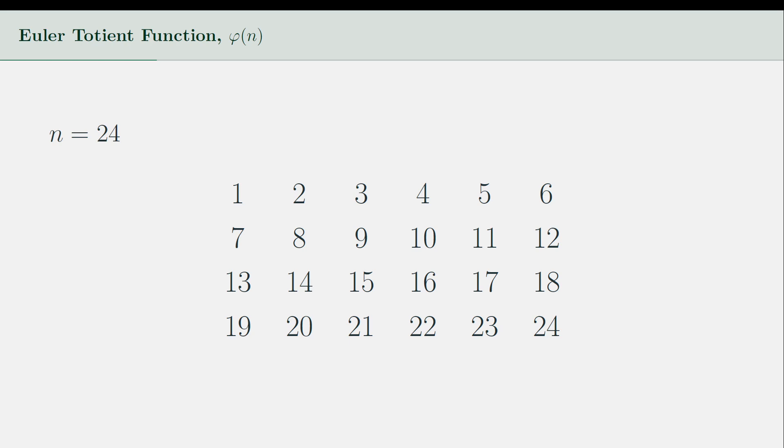For example, for n equals 24, there are clearly 24 positive integers from 1 to 24 as listed. Since 24 has 2 and 3 as prime factors, then we should remove from this list all numbers that are divisible by 2 or 3, because they definitely are not relatively prime to 24.